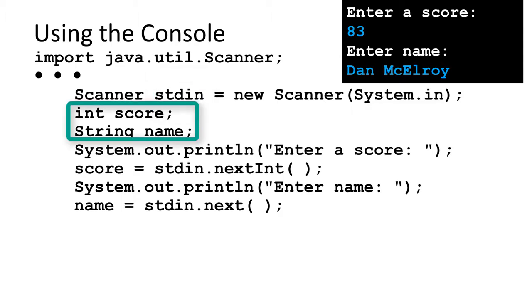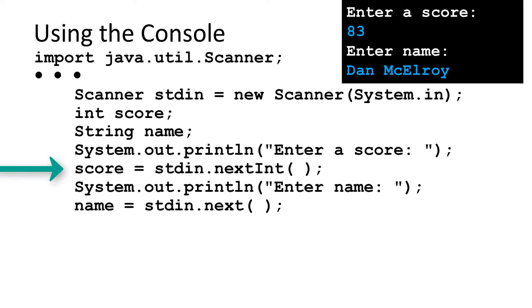and it is set to the system input, which typically is the keyboard. Two variables are declared: an integer for score and a Java string for name. A prompt is displayed requesting the user to input the score. stdin.nextInt() reads the score from the keyboard and places it into the variable named score. The second prompt requests the user to enter a name.